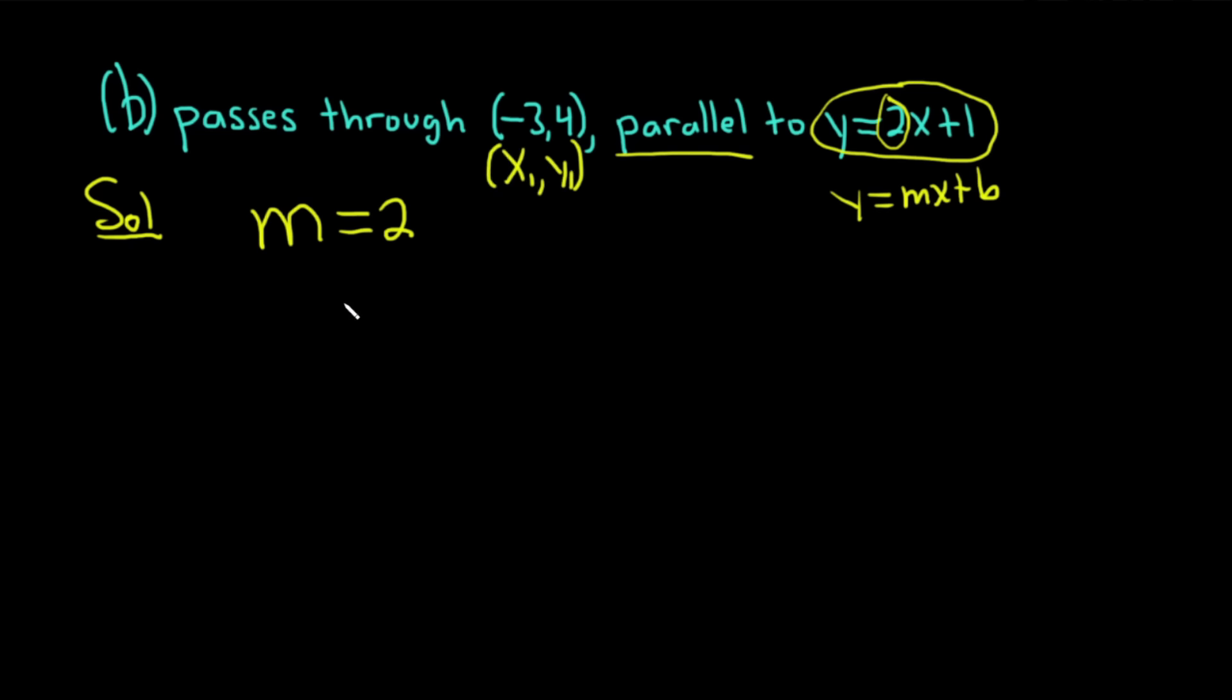And so again, we'll write down the formula for the point slope form of a line. It's y minus y1 equals m parentheses x minus x1. It's a good idea to write it down every single time you do a problem, and then it'll become burned in your memory. You'll never forget it.